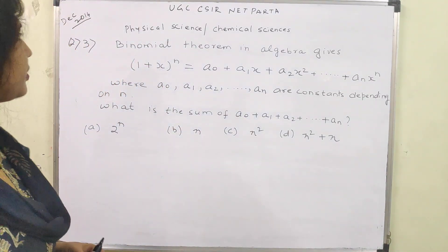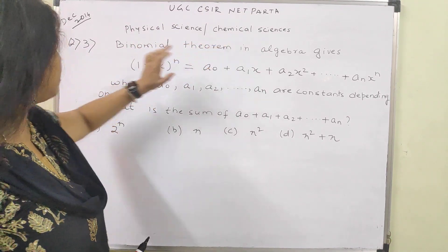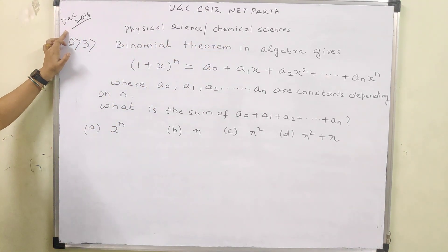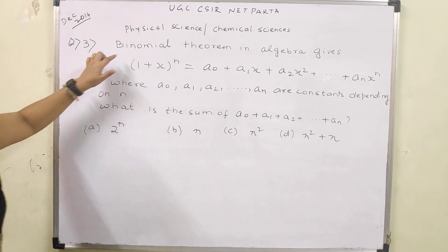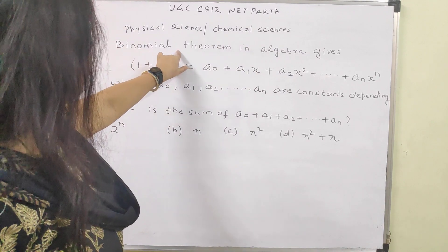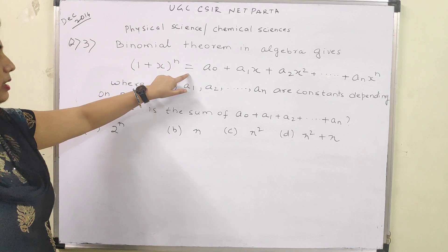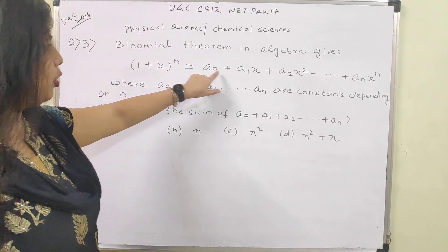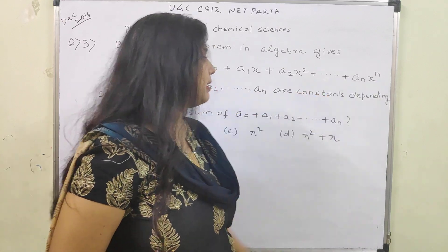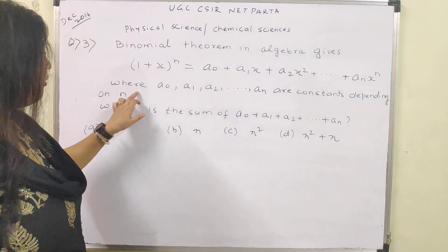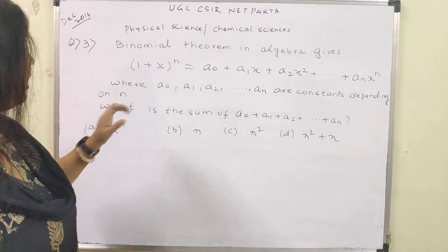Let us move ahead for question number 3, again from physical sciences, chemical sciences, December 2014. The question says: the binomial theorem in algebra gives (1+x)^n = A0 + A1·x + A2·x² + ... + An·x^n, where A0, A1, A2, ..., An are constants depending on n. What is the sum A0 + A1 + A2 + ... + An?